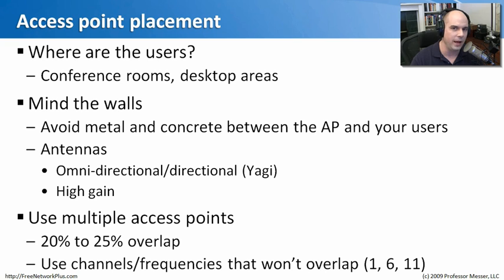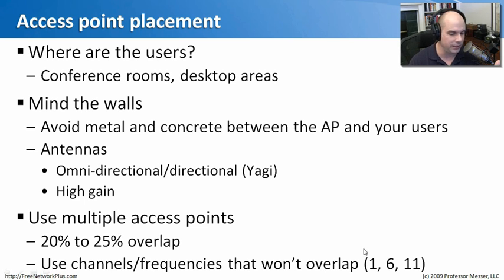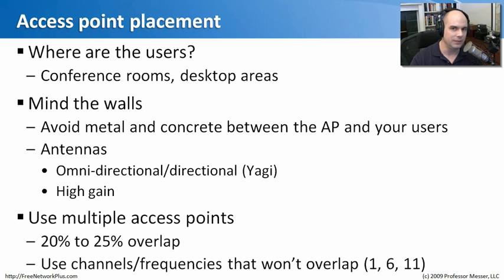It works the same way in a very large building — you need to overlap that signal. Notice that you can also use frequencies that won't overlap: channels 1, 6, and 11. If you're using multiple access points, you don't want the frequencies fighting with each other, so you put them on different frequencies.